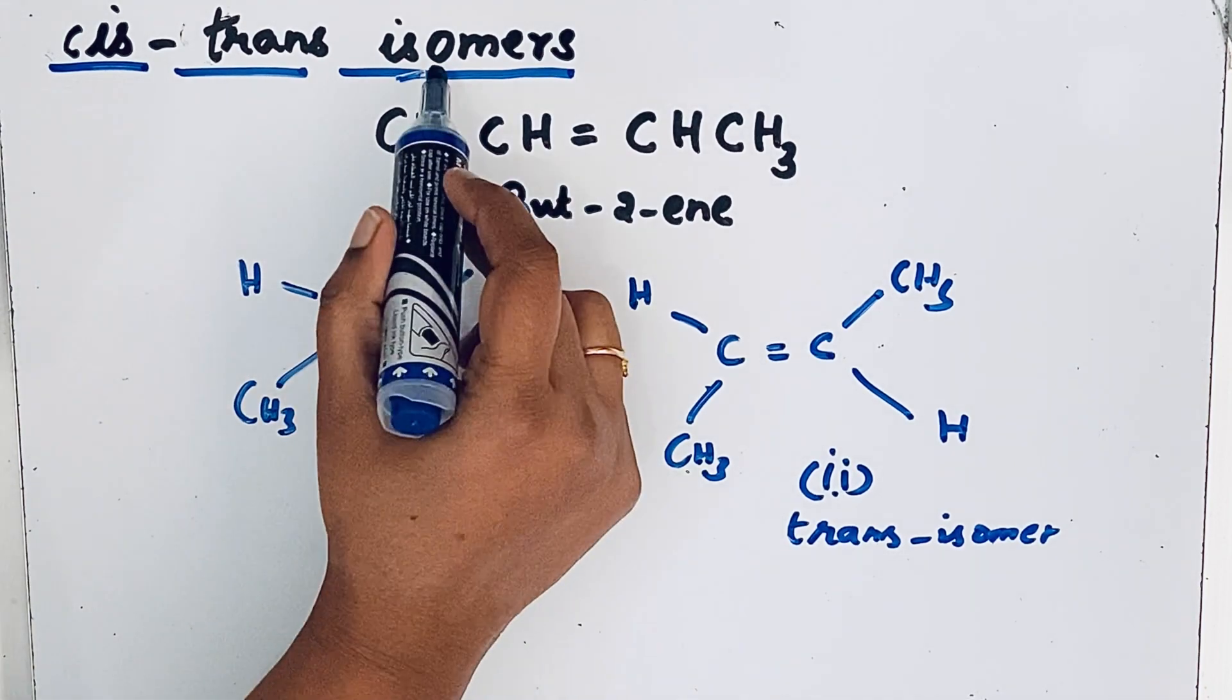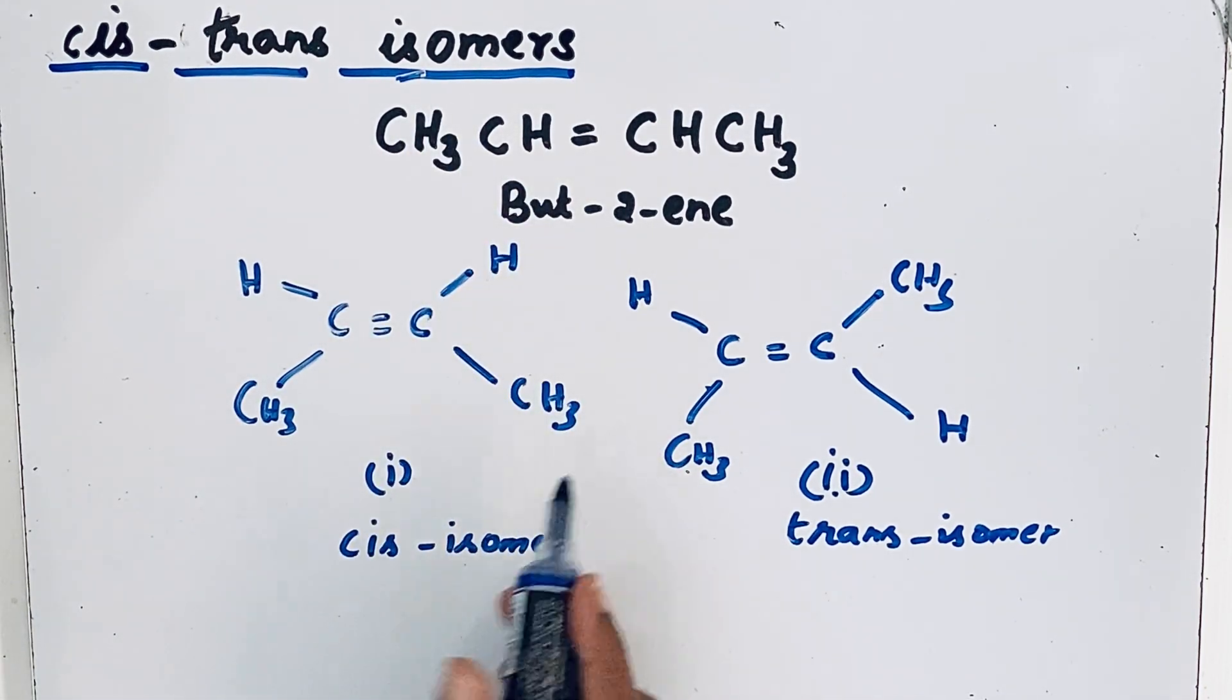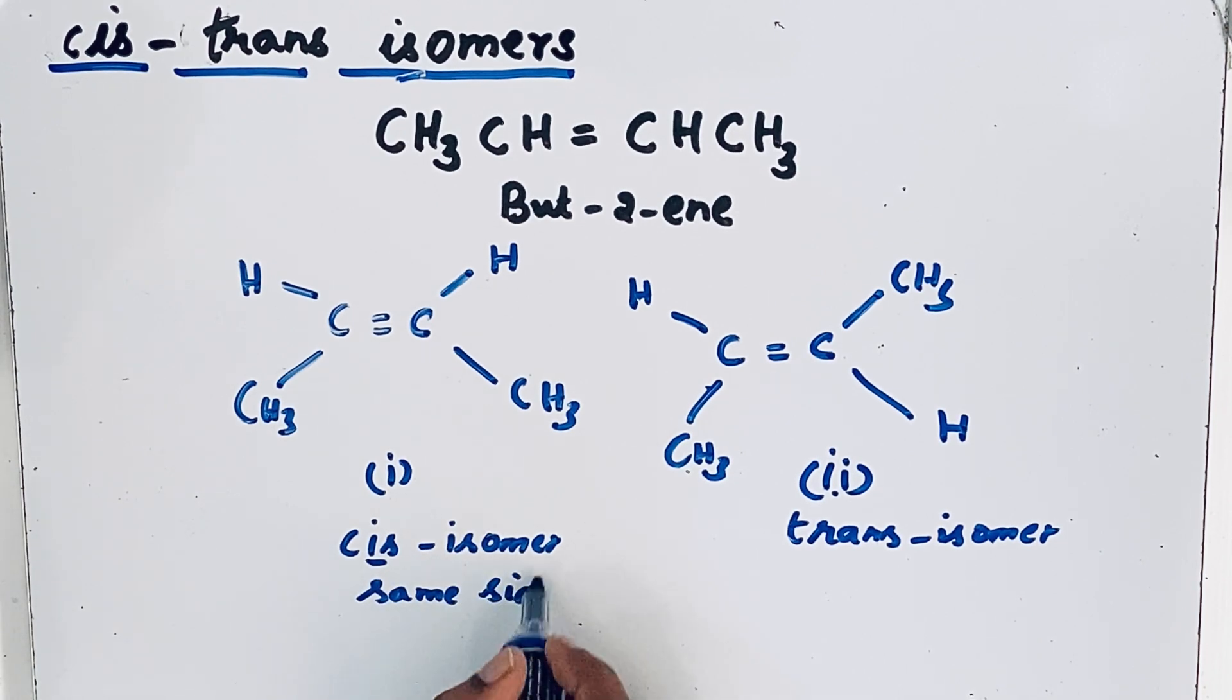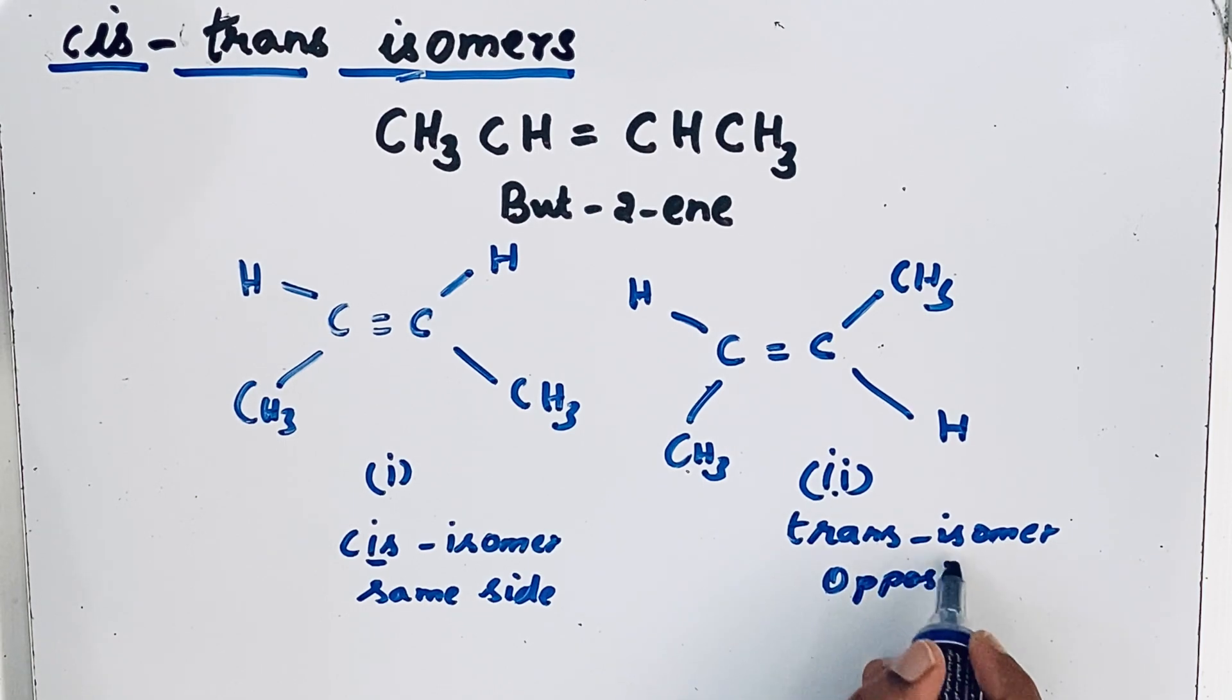Isomer means same structure. Here also cis is, you just remember that cis means same side. Then for trans opposite side.